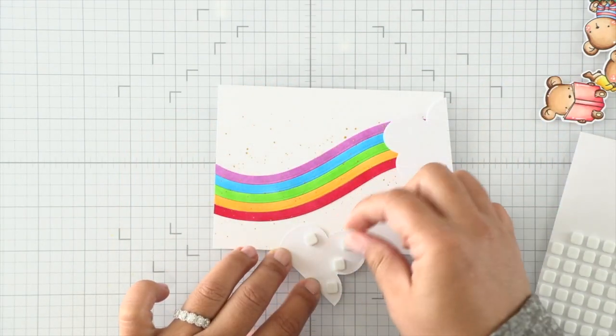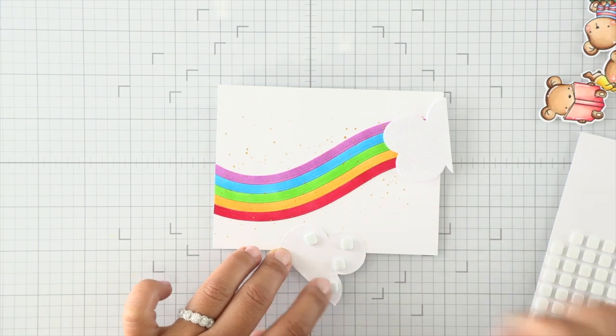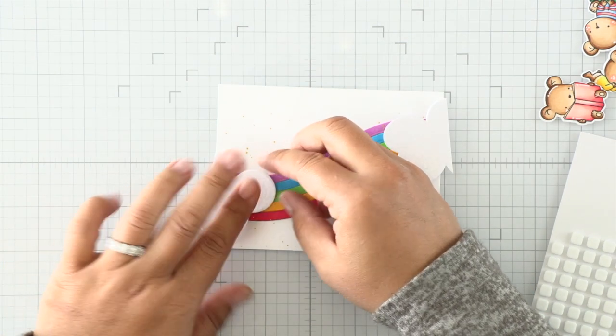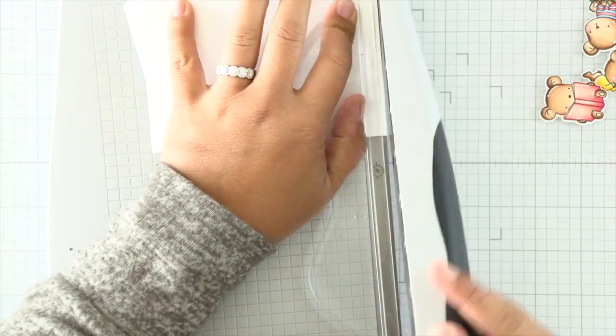I'm attaching that to the ends of the bands using some foam squares, and then we'll put that back in our trimmer and chop off the excess like we did before with the rainbow band. I'm using foam tape because I want some dimension.